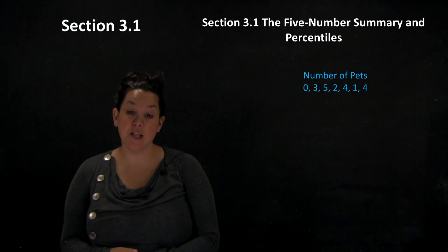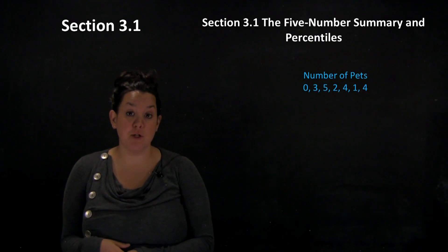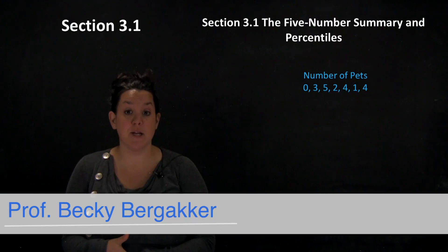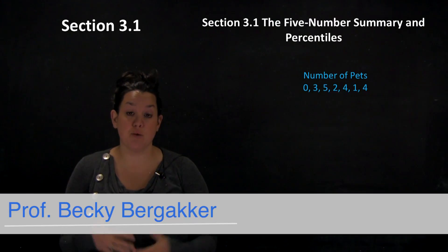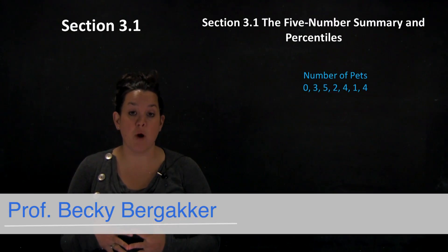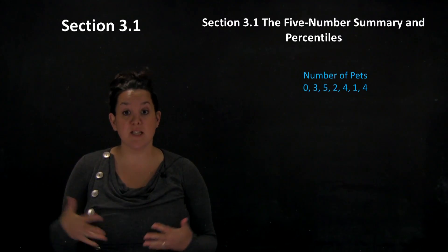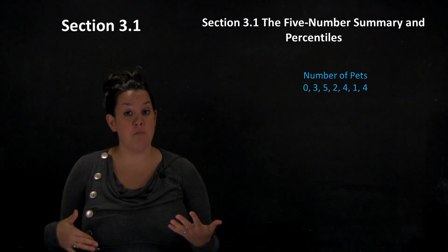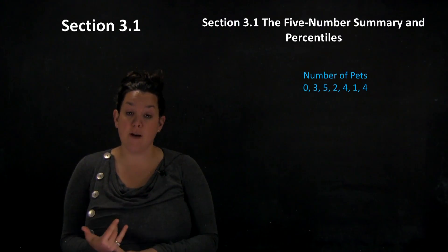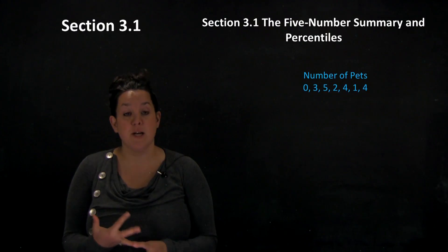Good morning class. Today we're going to start chapter 3, which is the analysis of one quantitative variable. Right in the beginning in section 3.1, we're looking at types of descriptive statistics, specifically numeric summaries — the five number summary and percentiles.